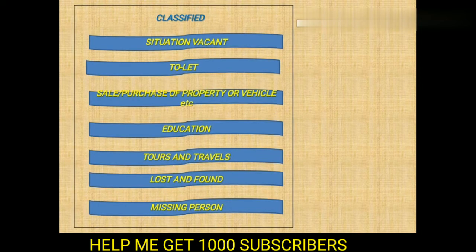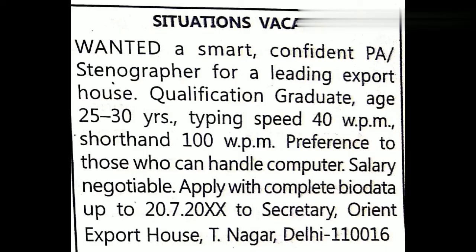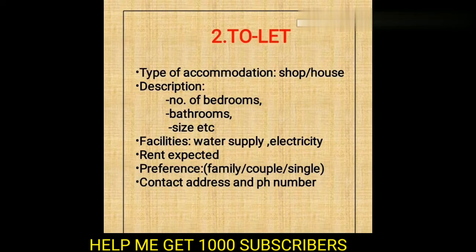These are the different categories under which we draft advertisements for the classified section. Let's see the requirement of each category one by one. The first category is Situation Vacant. When you start writing the content, the first word should be in capital letters — 'Wanted' or 'Required'. Then mention the name of the post, number of posts, qualification, preferences, salary, scope of promotion if any, application and interview date, and the organization's name, address, and contact number.